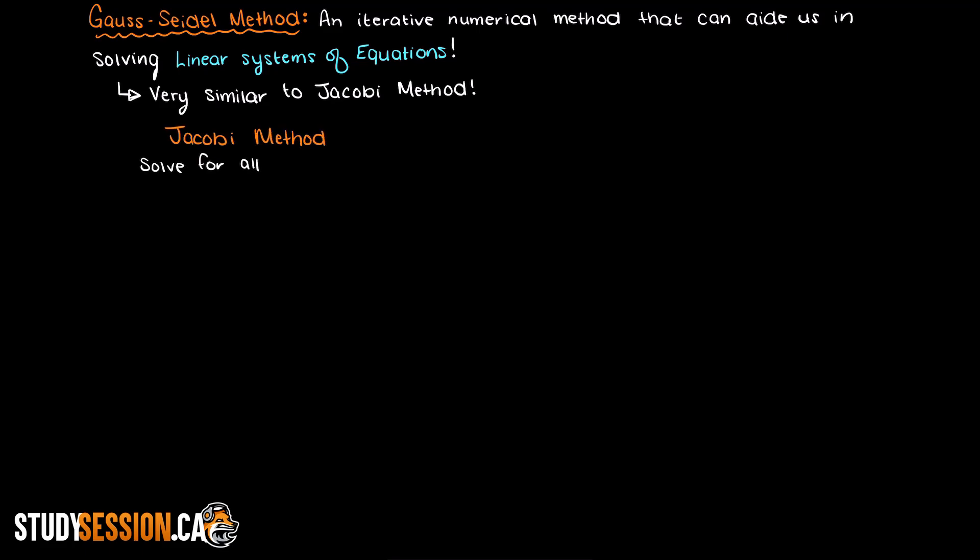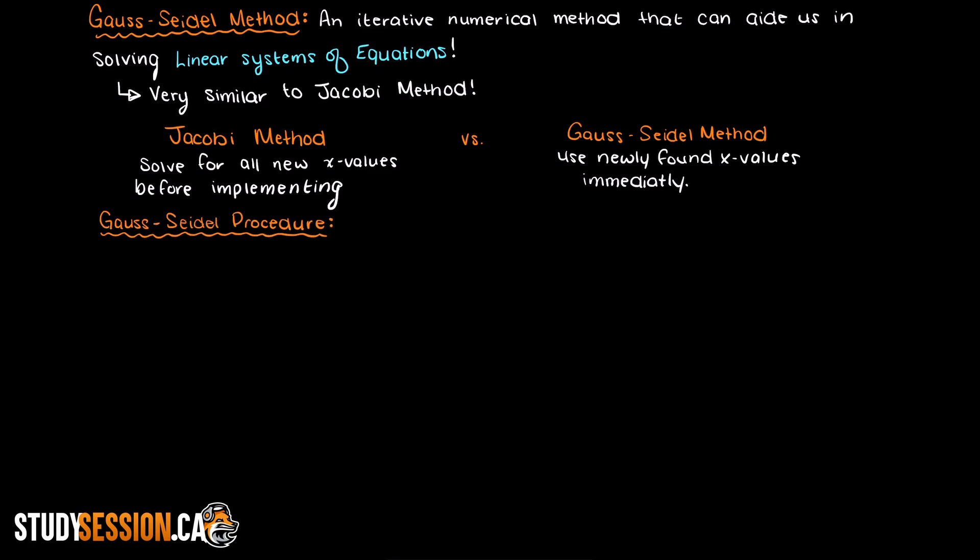In short, the Gauss-Seidel method is the exact same thing as the Jacobi iteration, except instead of solving for all of your x values and then taking an iterative step, you use the newly found x values for your next step. Let's walk through the steps of solving a problem with the Gauss-Seidel method and it should make sense.